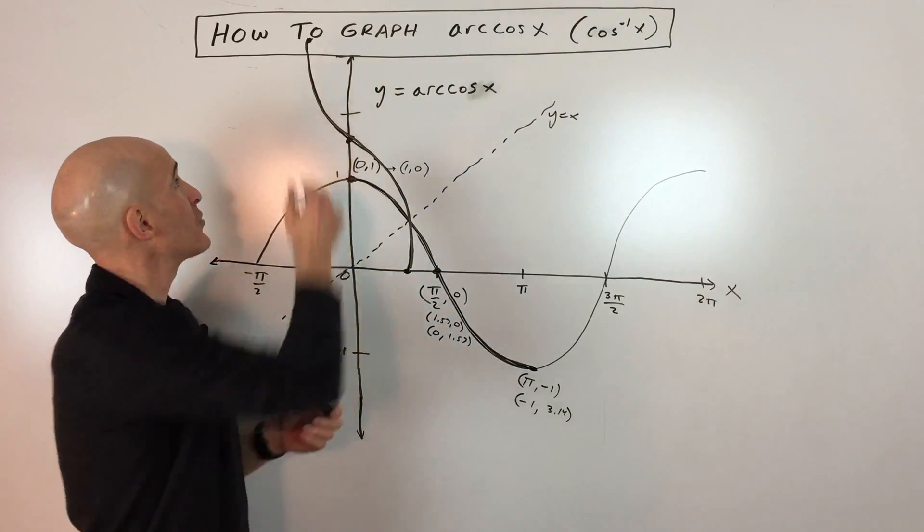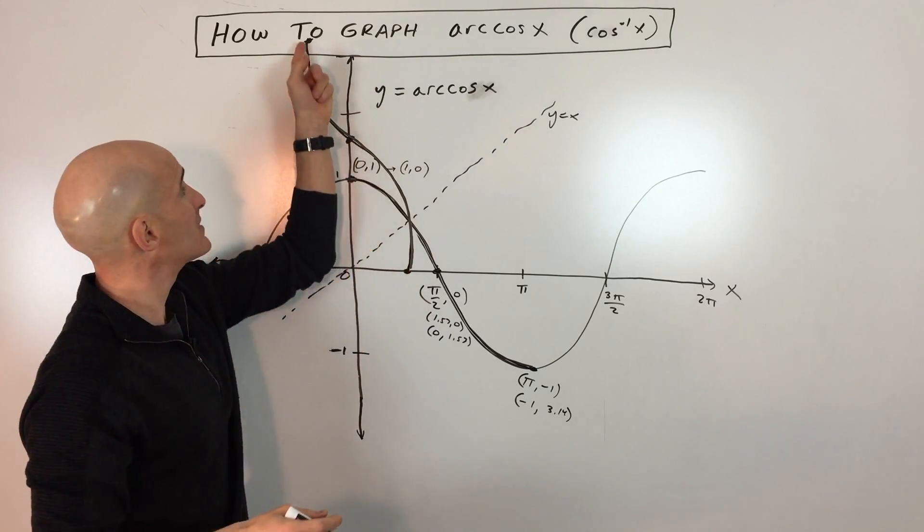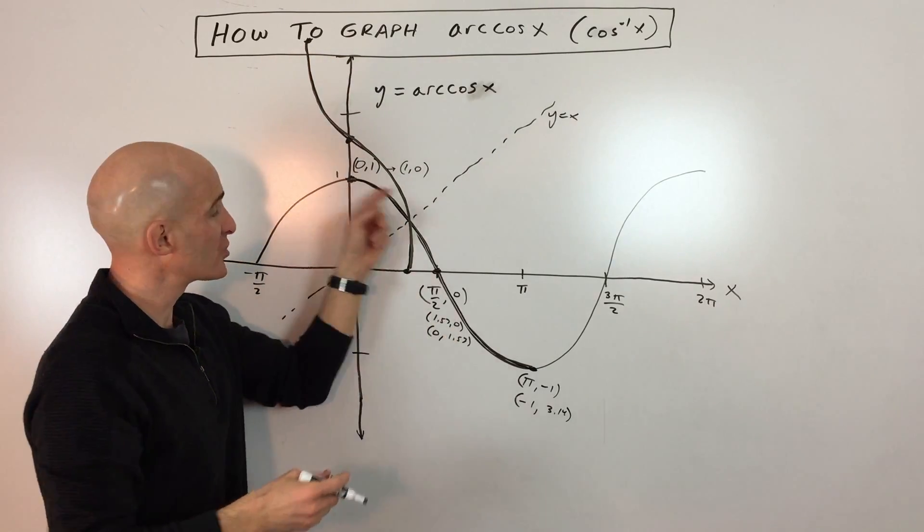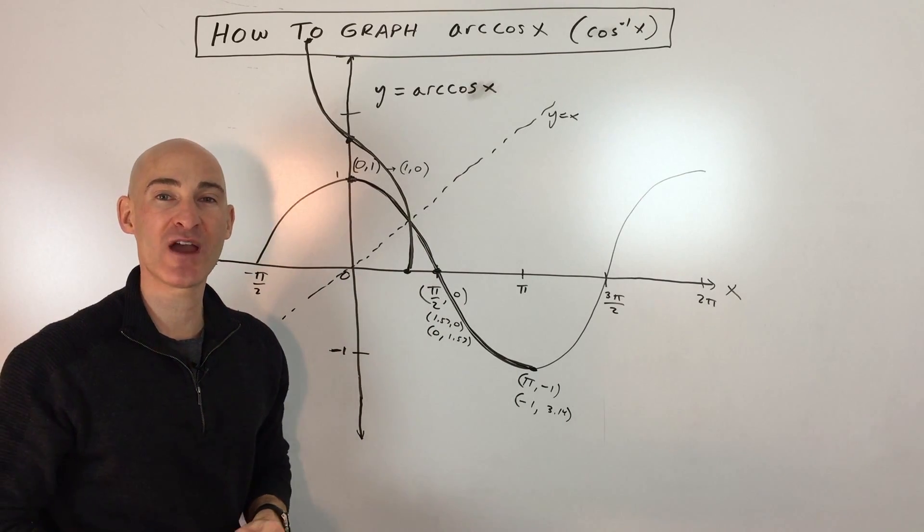So that's how you graph the cosine inverse graph. Just remember this graph doesn't keep going. It just goes from this point to this point, because we're just looking at that particular portion of the cosine graph. So I hope this helped you to understand how to graph it better.